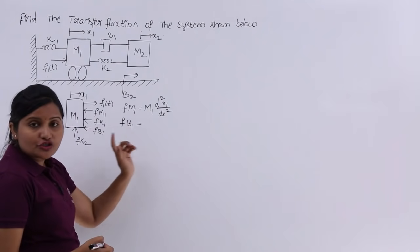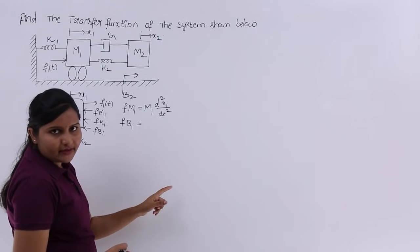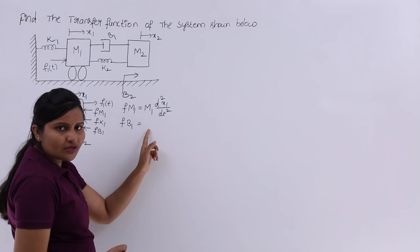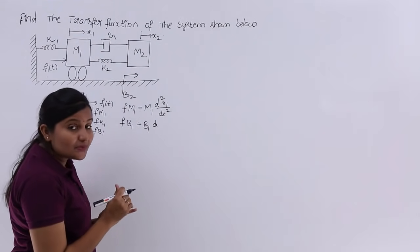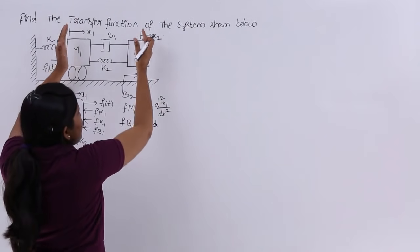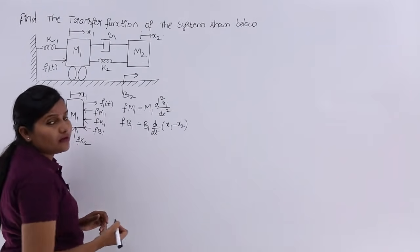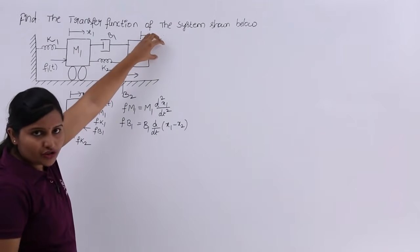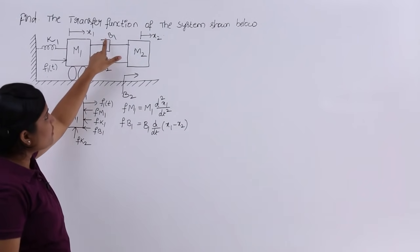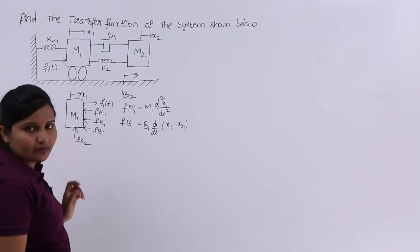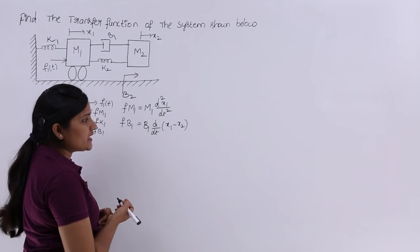For the dashpot, force is proportional to velocity — that is, differentiation of displacement. The proportionality constant is friction coefficient b1, so force = b1 × dx/dt. However, b1 is not fixed to a reference; both sides have displacement. So you must consider the difference: for mass m1's side, the resultant displacement is x1 minus x2. Therefore, fb1 = b1 × d/dt(x1 − x2).